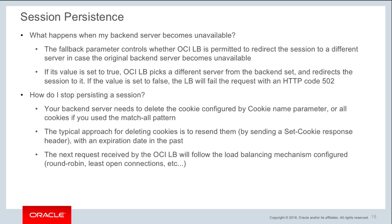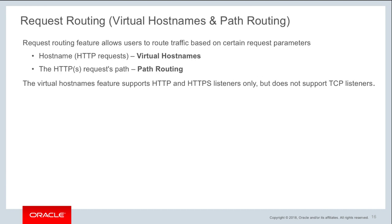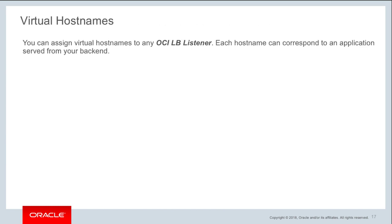Once the cookie is deleted, the load balancing service routes subsequent requests using the configured load balancing policy, whichever that may be — round-robin, least open connections, etc. Request routing is a feature that allows you to route traffic based on certain request parameters. There are two types: virtual hostname, where you route based on a matched hostname, and path routing, where you route based on a URL path. Both features only work with HTTP and HTTPS listeners, not TCP listeners.